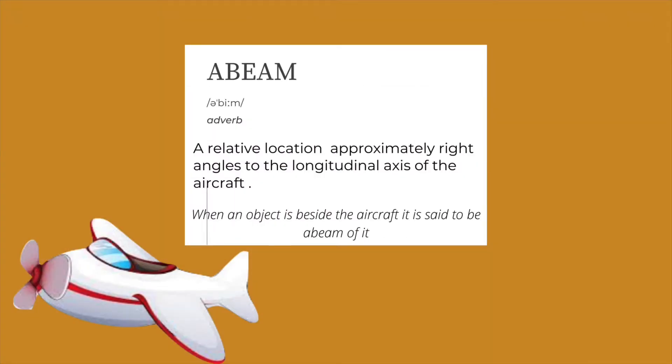First definition: Abeam. It is a relative location approximately at right angles to the longitudinal axis of the aircraft. When an object is beside the aircraft, it is said to be abeam of it. Simply put: is it to my left side? Is it to my right side? Either way, we say it is abeam. So anything to the left or the right side of an aircraft, we say abeam.